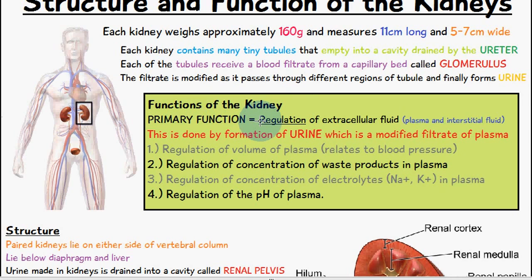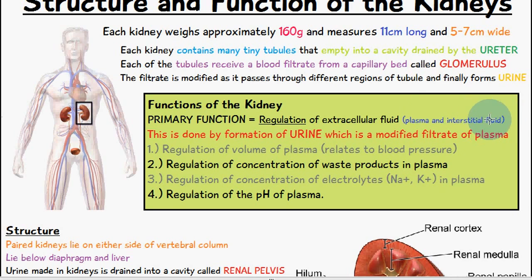The primary function of the kidney is the regulation of extracellular fluid — that is, plasma and interstitial fluid. This is the fluid around the cells, and it is regulated by the formation of urine, which is a modified filtrate of plasma. So when we have the filtration of plasma, eventually we get urine production.